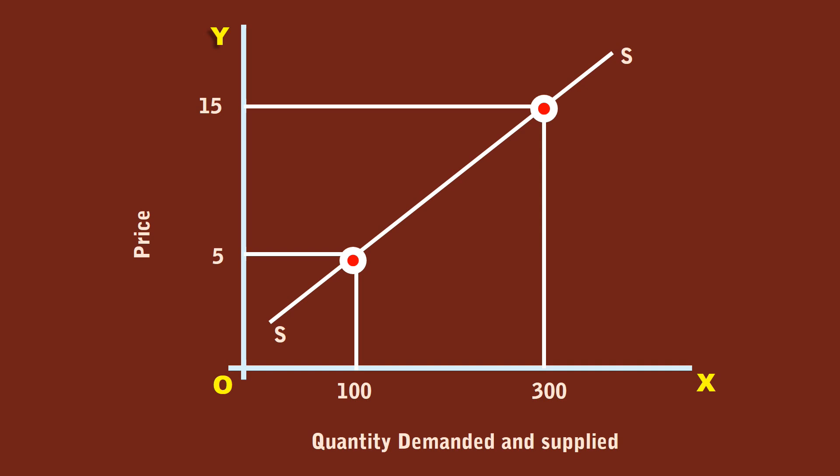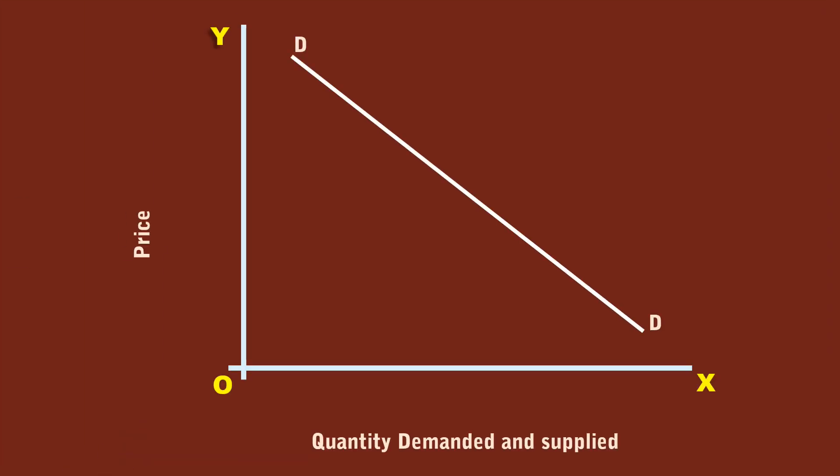The consumers are the demand generators. D-D is the demand curve. They want to buy less at a higher price. At Rs. 15 they want to buy 100 units.